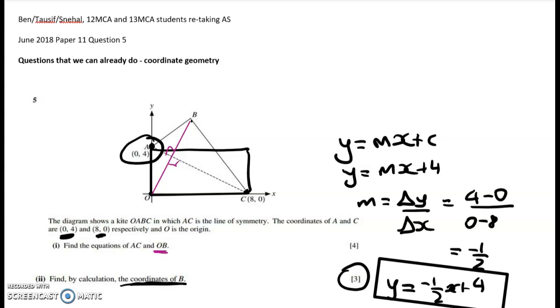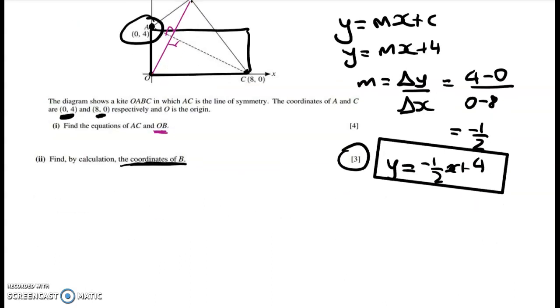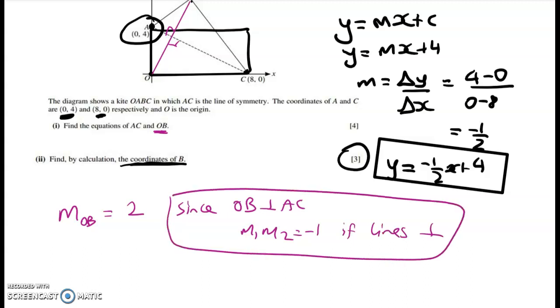And the diagonals in a kite are at right angles to each other. And that's the clue to finding the equation of OB, because we know that perpendicular gradients multiply to negative 1. That means that the gradient of OB must be equal to 2. Since OB is perpendicular to AC, and M1, M2 equals negative 1 if lines are at right angles. So some kind of reasoning like this is worth including.